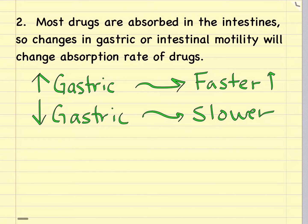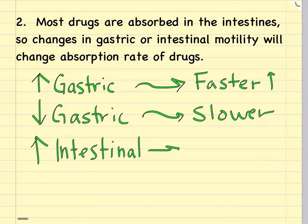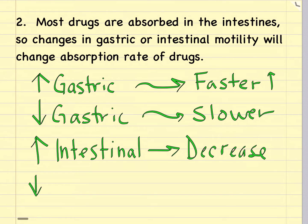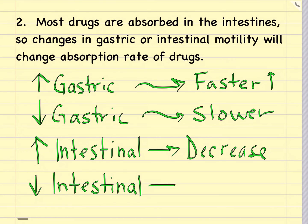Anything that slows down gastric motility is going to delay absorption of that drug through the small intestine. If we look at intestinal motility, some diseases might speed up motility, such as diarrhea. Anything that speeds up intestinal motility is going to decrease absorption because the drug moves through quicker and has less time to be absorbed. Conversely, anything that decreases intestinal motility, such as an ileus where the intestine is paralyzed, is going to allow the drug to stay in the intestine longer and actually increase absorption.